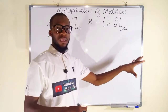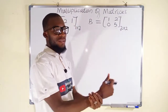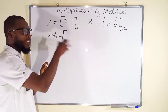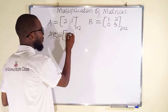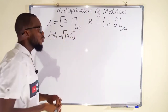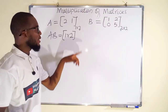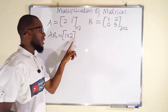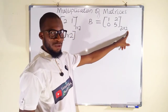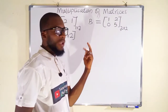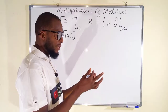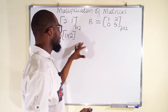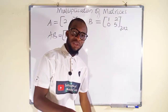Another important property of this order is that it determines the order of the result after multiplication. After multiplying matrix A and B, we are going to obtain a matrix of dimension 1 by 2 — 1 here stands for the number of rows from the first matrix and 2 for the number of columns from the second matrix. So the order has two advantages: it can determine whether matrices can be multiplied, and it can determine the order of the result.